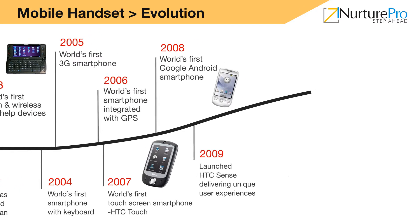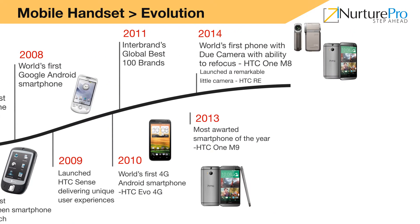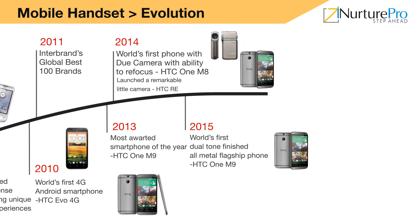2010: World's first 4G Android smartphone, HTC EVO 4G. 2011: Interbrand's Global Best 100 Brands. 2013: Most awarded smartphone of the year, HTC One M7. 2014: World's first phone with dual camera with ability to refocus, HTC One M8; also launched a remarkable little camera, HTC RE. 2015: World's first dual-tone finished all-metal flagship phone, HTC One M9.